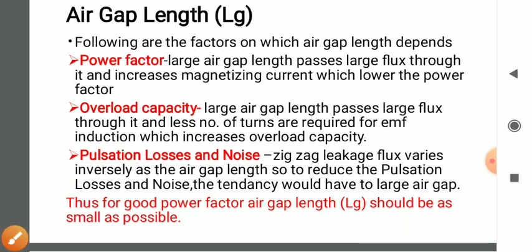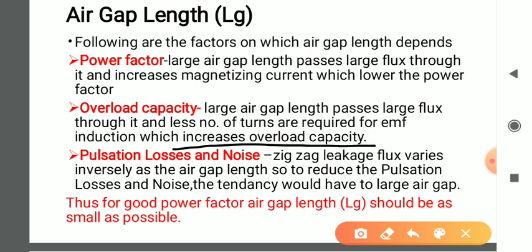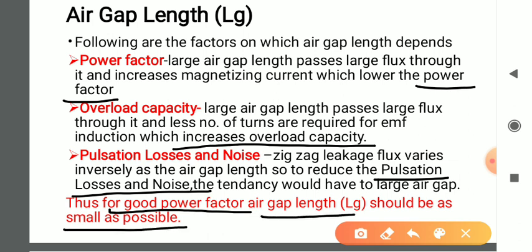If we maintain a large air gap, we get increased overload capacity and the pulsation losses and noise become reduced, but we need to compromise with the power factor. Therefore, the power factor is a very important factor which directly affects the performance of the machine. Whenever we need to design a good power factor machine, we have to go for the minimum possible length of air gap. With minimum possible air gap length we get a design of good power factor, and in other words, good efficiency.